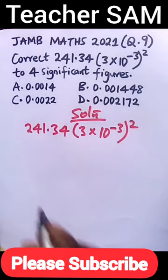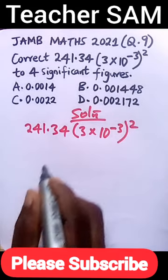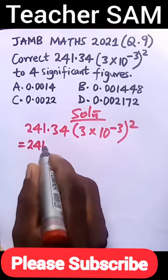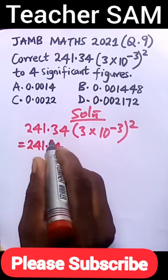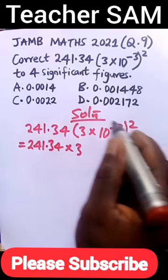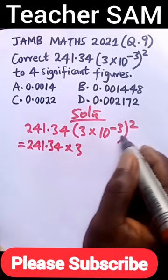The first thing is to clear up this bracket. This will equal 241.34 times 3. Now remember, according to indices, everything here will be raised to this power.